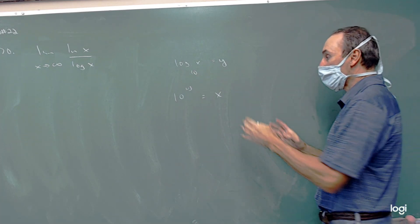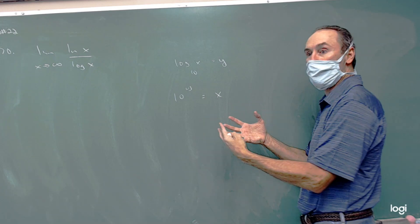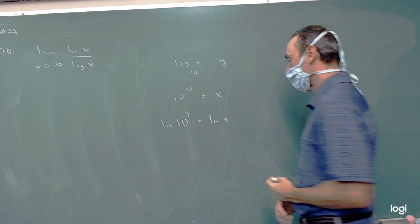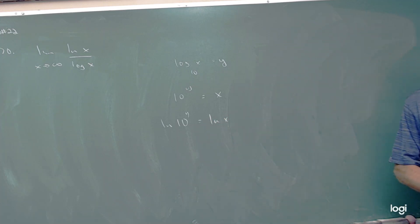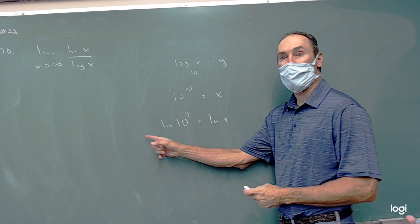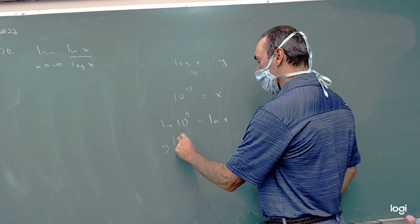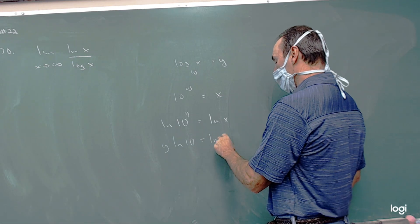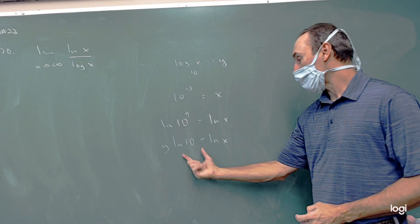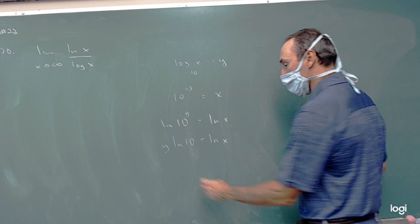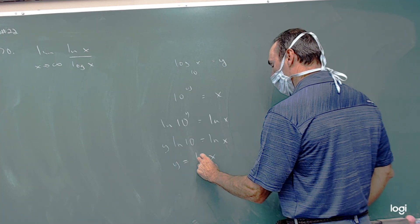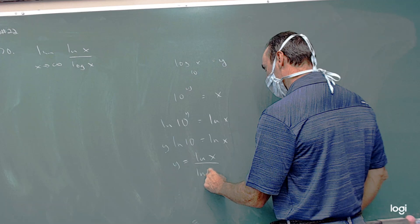Now we'll take the natural log — we'll introduce the one we want — so we'll take the natural log on both sides. Then we can use our property of logarithms and bring that y out in front. So we have y times natural log of 10 equals natural log of x. Then we're solving for y, which was our common log, so we'll divide the natural log to the other side. And so we get natural log x over natural log 10.